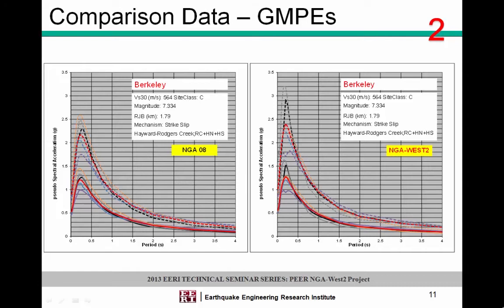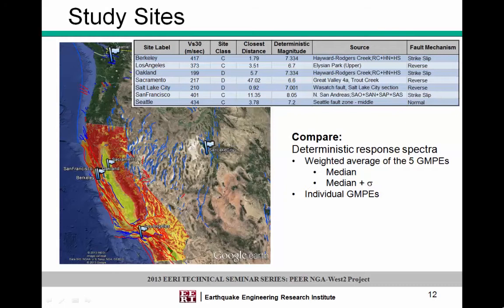I'm also comparing the individual ground motion prediction equations, with 2008 values on the left and 2013 values on the right using the same color schemes. The point of these comparisons — as Nick has already noted — is that some ground motion prediction equations go up, some go down, and we've already compared the averages. I went around the West Coast and randomly picked a number of different sites that happen to match some seminar locations and important sites.